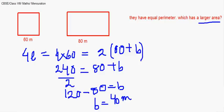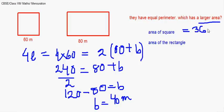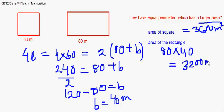Now we calculate the area of both shapes. Area of the square = L² = 60² = 3600 m². Area of the rectangle = length × breadth = 80 × 40 = 3200 m². Clearly, the square has the bigger area.